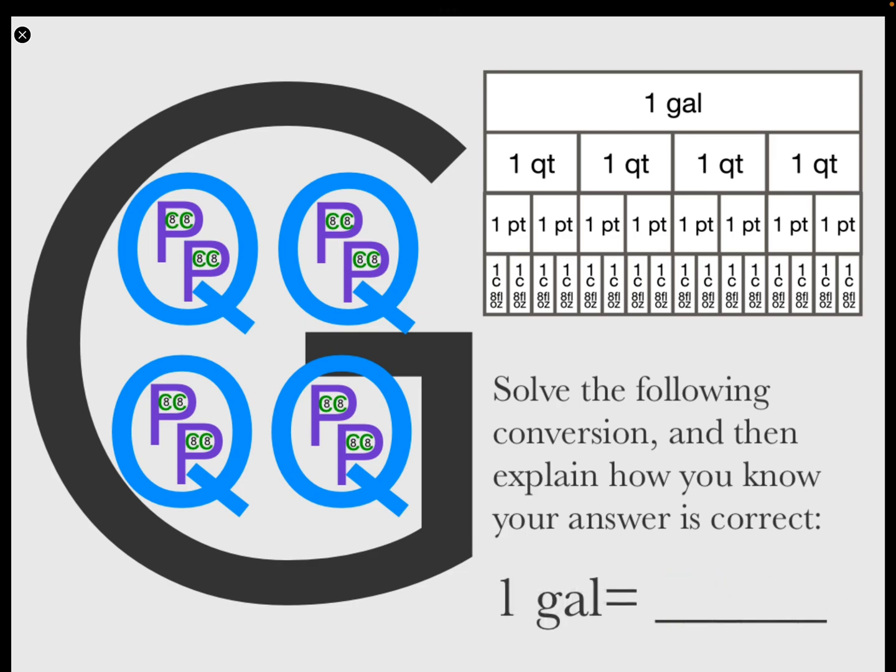One gallon equals four quarts, eight pints, sixteen cups, 128 ounces. Two quarts and eight cups.